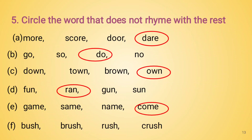Next set: bush, brush, rush, crush. Yes, here bush has a different sound, whereas brush, rush, and crush are the rhyming words. So we will circle the word bush as it has a different sound and does not rhyme with the rest. Children, in this way you will complete page number 43 in your Balbharti textbook. But don't forget to write today's date. Thank you.